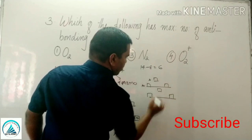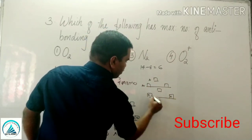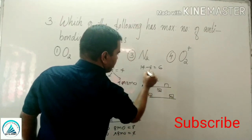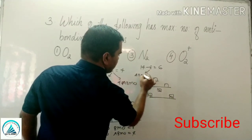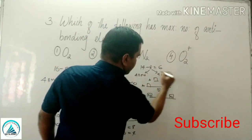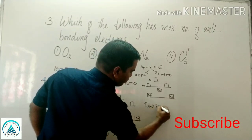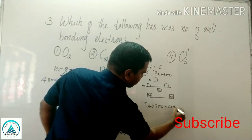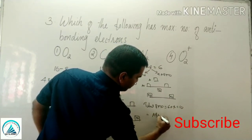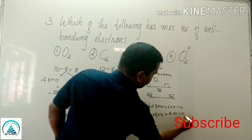C2 has 6 electrons to place: 1, 2, 3, 4, 5, 6. This gives 4 BMO (bonding electrons) and 4 ABMO (anti-bonding electrons). Total BMO = 6 plus 4 = 10. Total ABMO = 4 plus 0 = 4. O2 plus has 15 electrons: 15 minus 8 = 7 remaining.